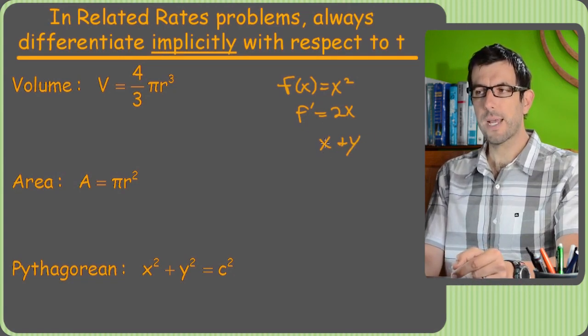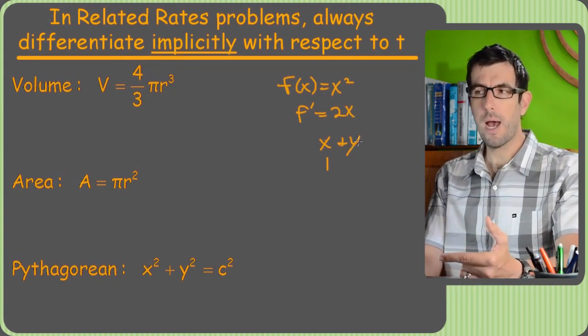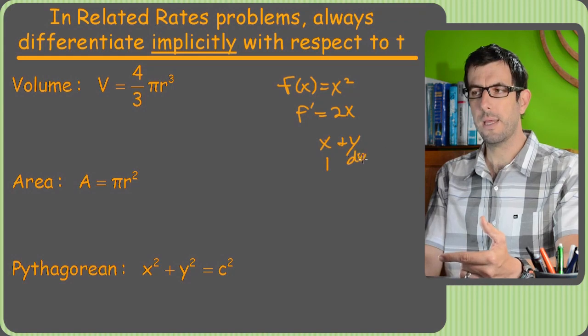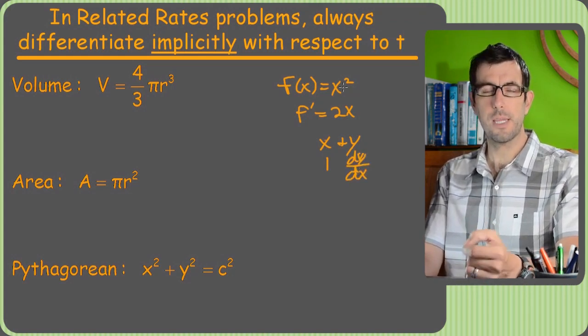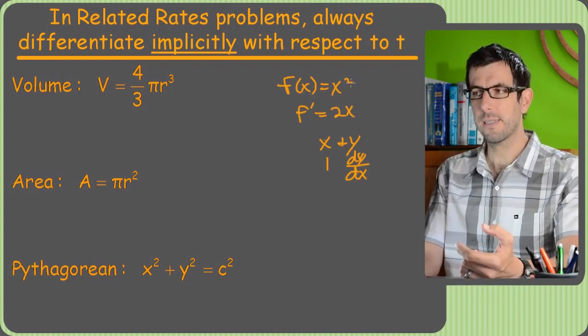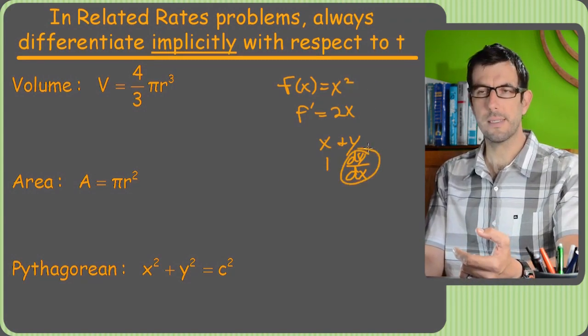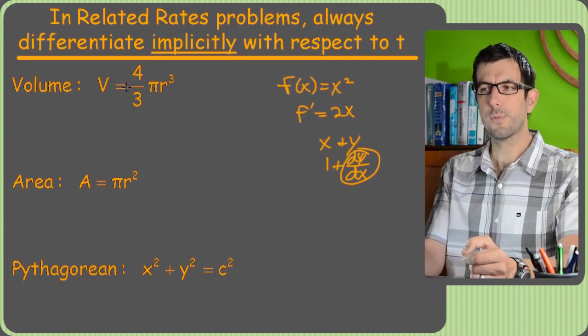So we had to take the derivative of something like, you know, x plus y. And then we'd have the derivative of x was still 1, but the derivative of y was all of a sudden dy/dx. So it turned out that if you take the derivative of anything besides x, you're going to have to put a d something dx next to it. And that's what's going to happen here.